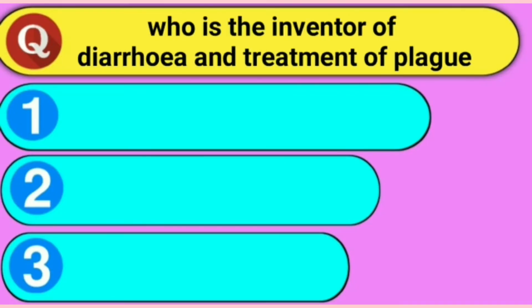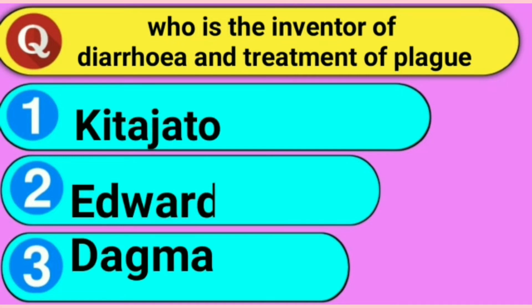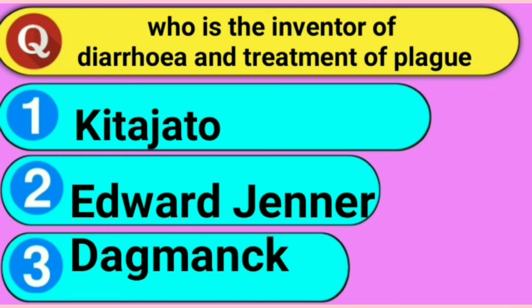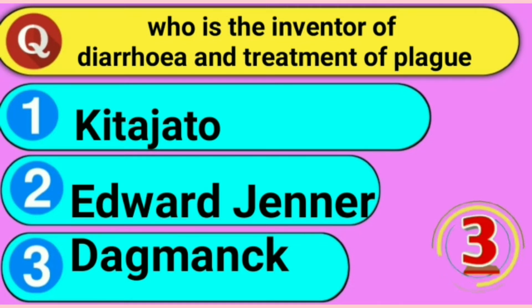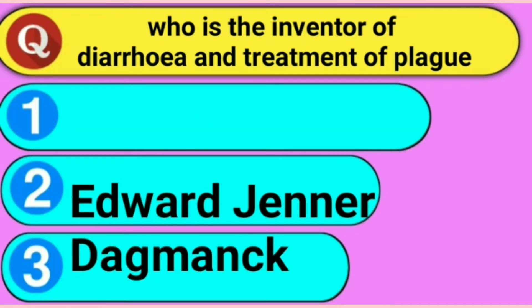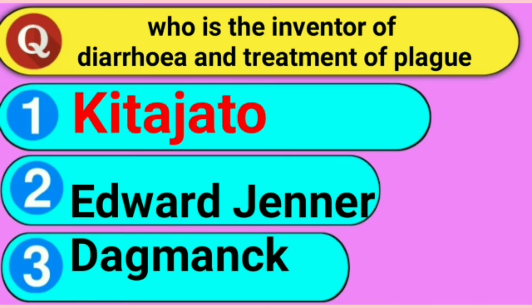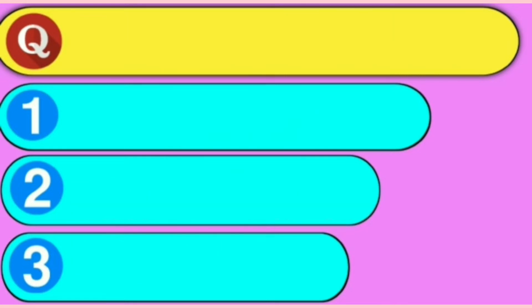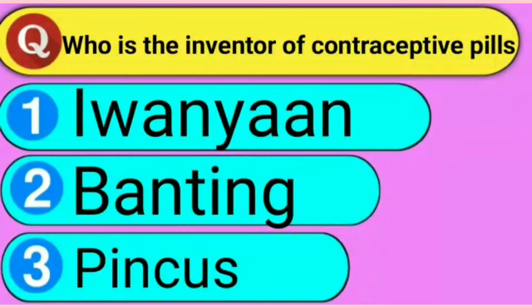Who is the inventor of diarrhea and treatment of plague? Your time starts now. Answer: Option 1, Kidja.